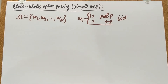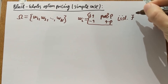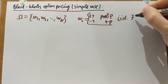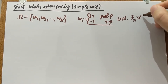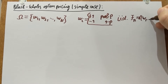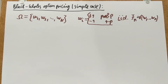The time horizon N and the probability p are going to be fixed. The natural filtration, as usual, is F_n — the sigma-algebra generated by the first n of these omegas. So that's going to be the abstract probabilistic setup.